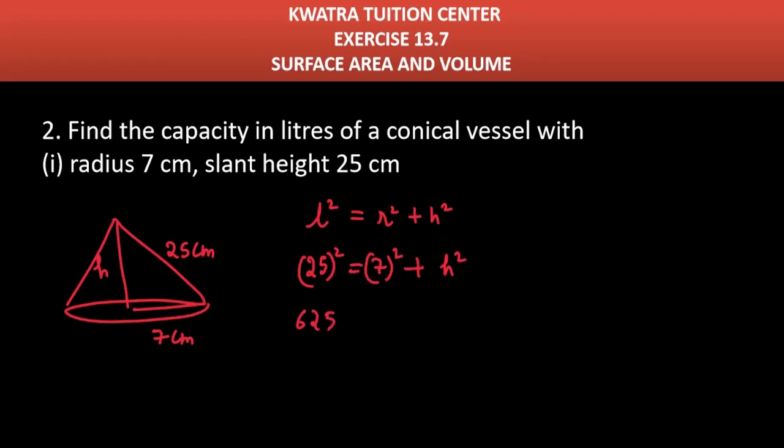25² is how much? 625. If you take the left side, it will be minus 49, it will be equal to H². So, how much will you minus? 576 is equal to H². And H² is how much will you get? 24. Because √576 is 24. 24 is equal to H.